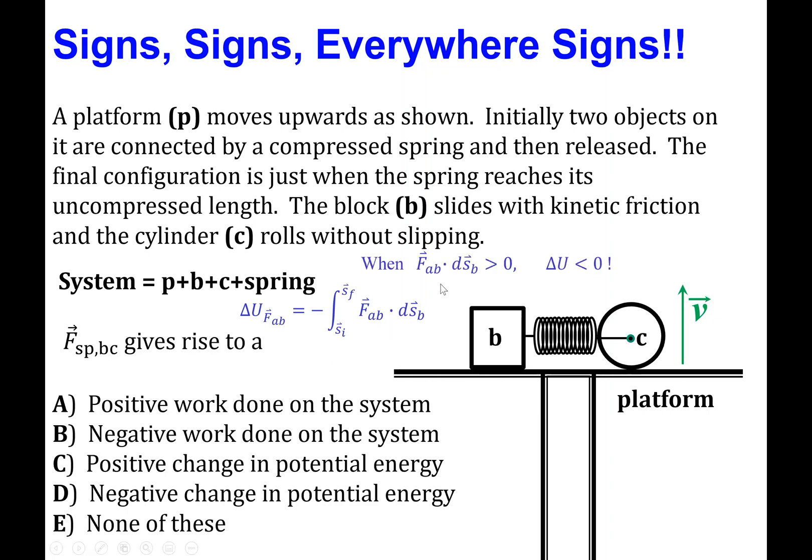So let's notice this, that if the dot product happens to be positive throughout the motion of the object here, the cylinder, then that would imply that the total change in potential energy is negative because of the minus in front here.